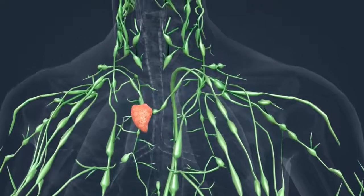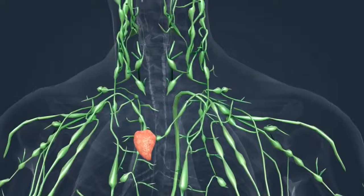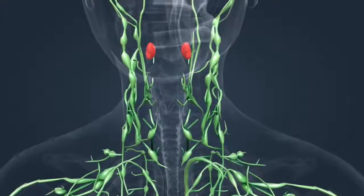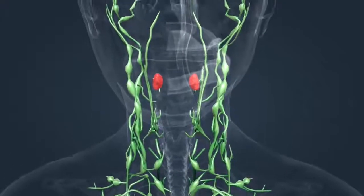Other important lymphatic organs include the thymus, the spleen, and the tonsils. They also play an important role in the maturation of white blood cells and in immune defense.